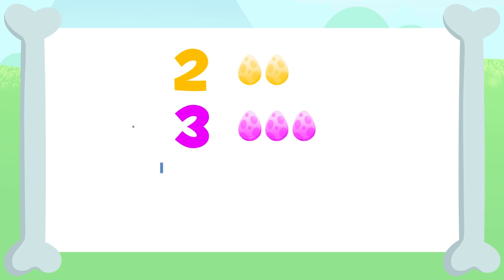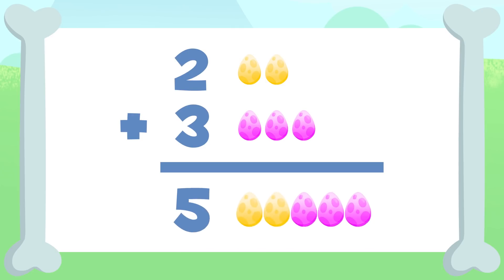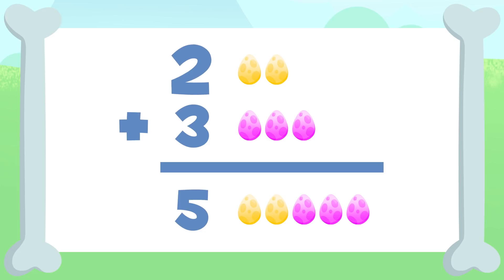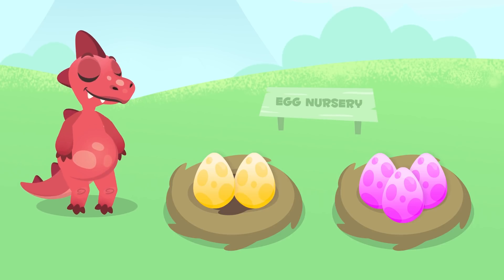So all the eggs together would sum up: one, two, three, four, and five. We have five eggs! Two plus three equals five. The result of adding up two plus three is five. Well done, Dino! Do you like adding up?